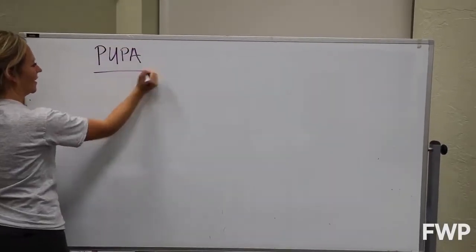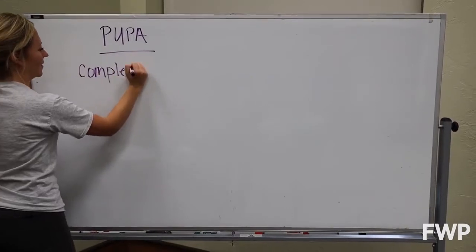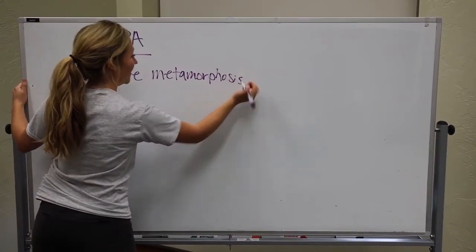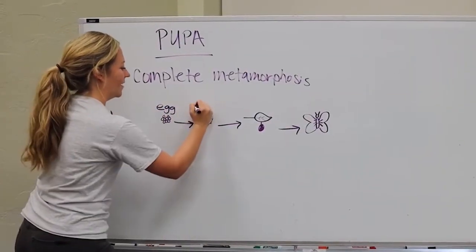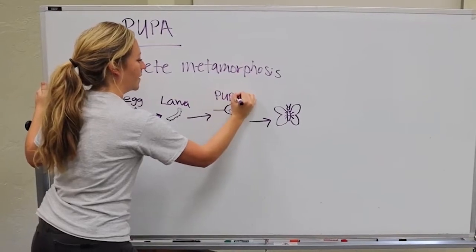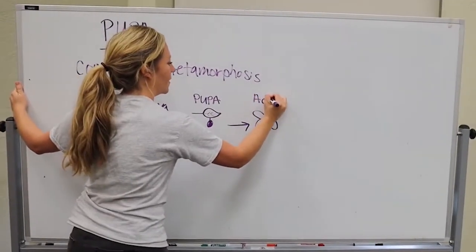A pupa is a life stage of insects that go through complete metamorphosis. Insects that go through complete metamorphosis go from an egg to a larva that looks very different from the adult to a pupa and finally to the adult.